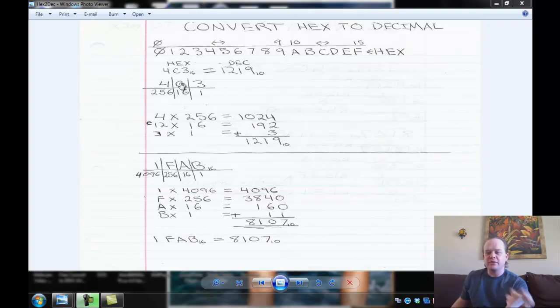We go up here. We go C. C, that's 12. So we go 12 times 16. I got this real crappy little C right here. And here's 12 times 16 equals 192. 3 times 1 equals 3. And then add these columns up. 1219. Let's try it again.